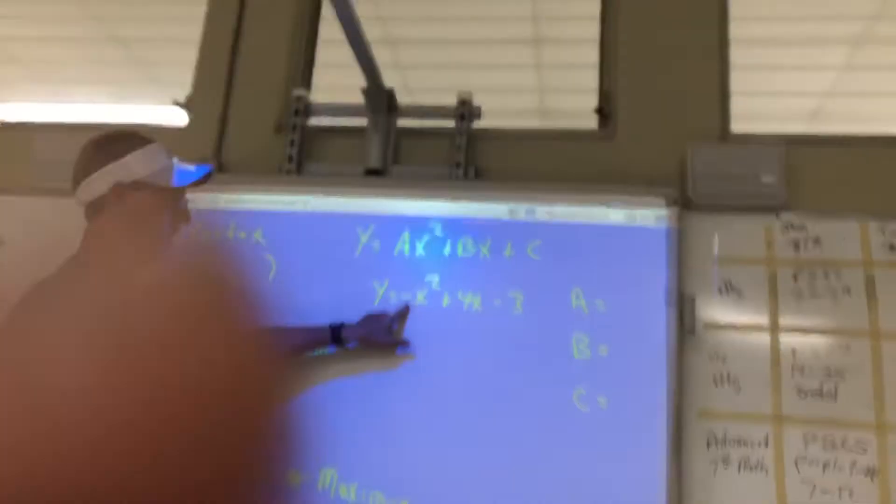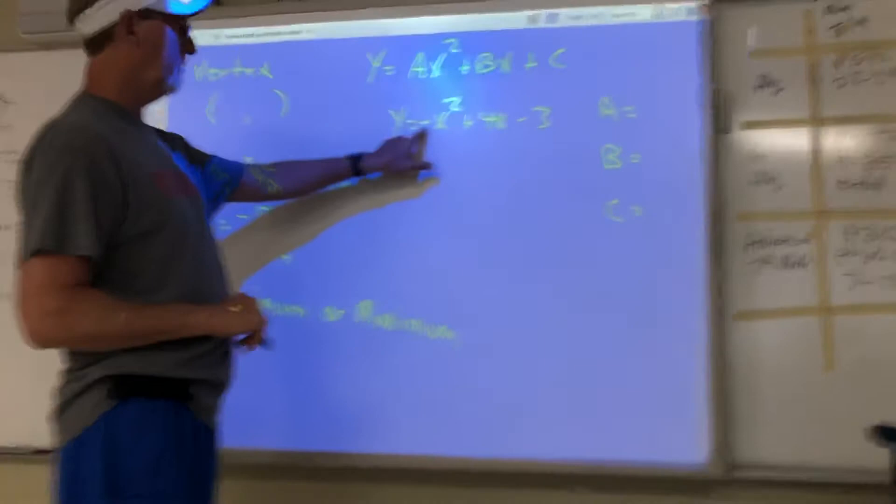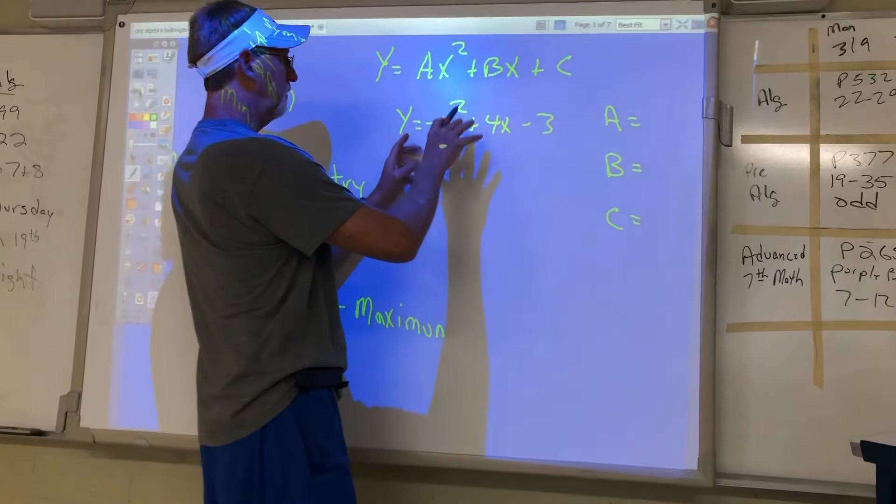And I know one thing I didn't talk about Monday was when you have a negative x squared or negative A. Again, first thing we need to do is identify the A, B, and the C. The A here is negative 1, the B is 4, and the C is 3.